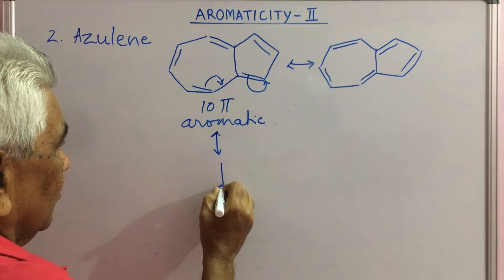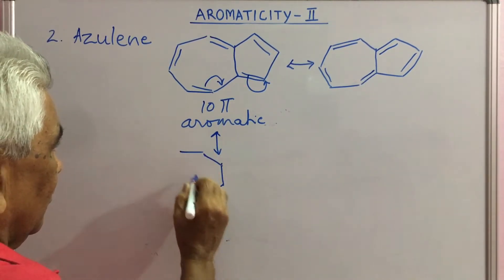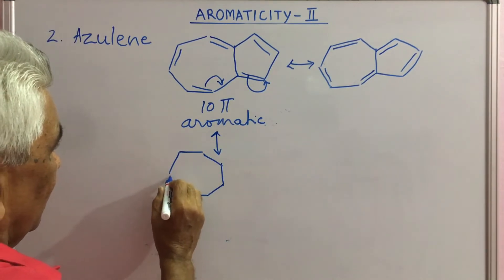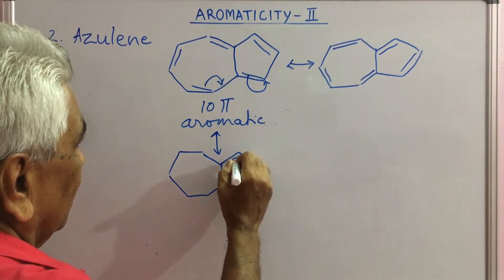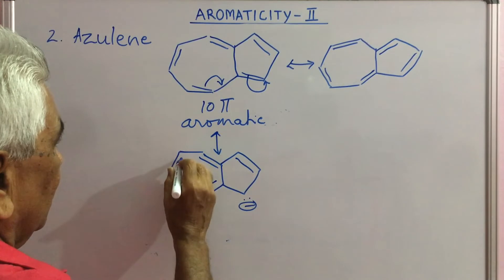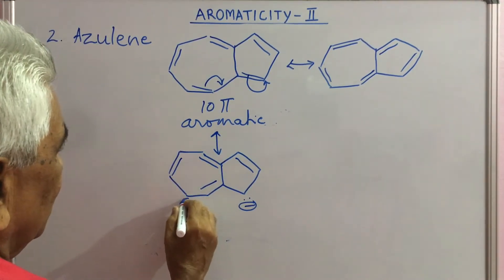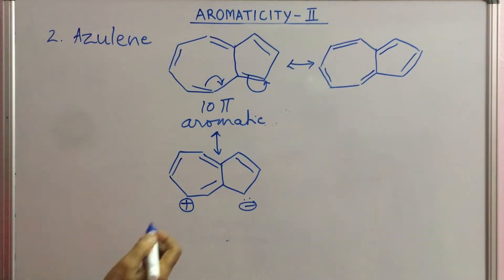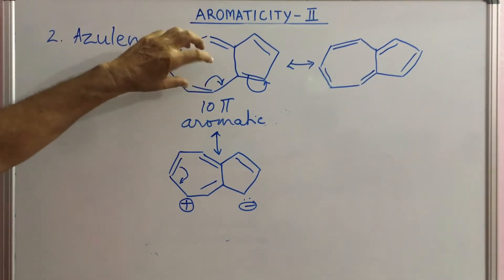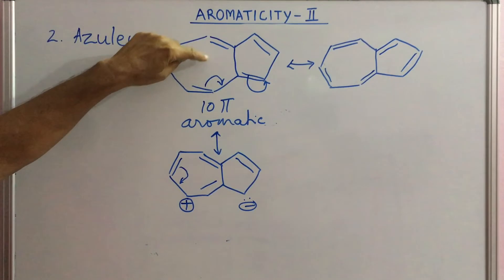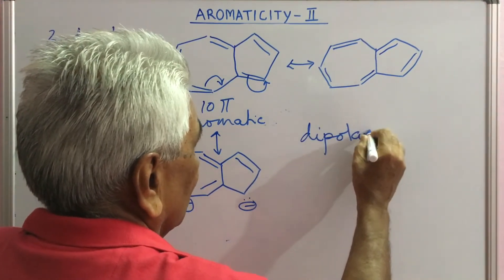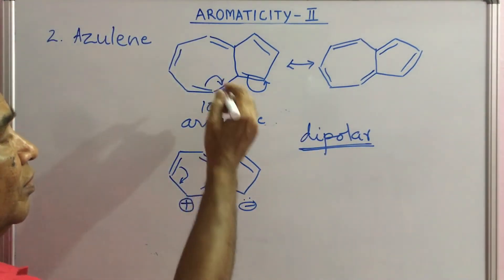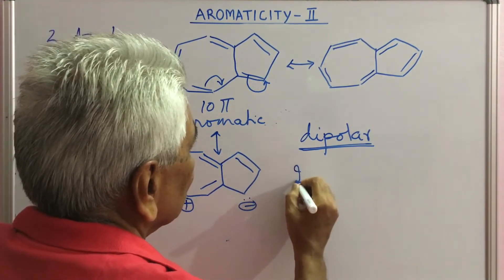So azulene is the hybrid of these structures, with a positive charge on one ring and a negative charge on the other, forming a dipolar structure. This is the reason why azulene is intense blue in colour.